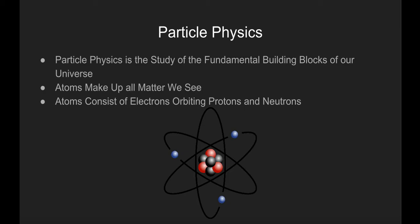You probably have learned that all matter consists of atoms, which in turn consist of electrons orbiting a nucleus of particles called protons and neutrons.